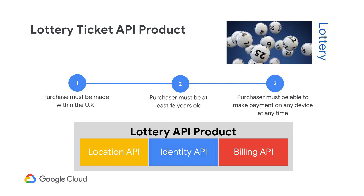Furthermore, including reusable assets such as an enterprise security policy and a traffic management policy will ensure adherence to corporate requirements, enabling faster time to market. Because the lottery API product packages all of the necessary items, applications can be quickly created to allow purchasing of lottery tickets over a wide variety of experiences convenient for the player — like online, mobile app, and kiosk purchases.